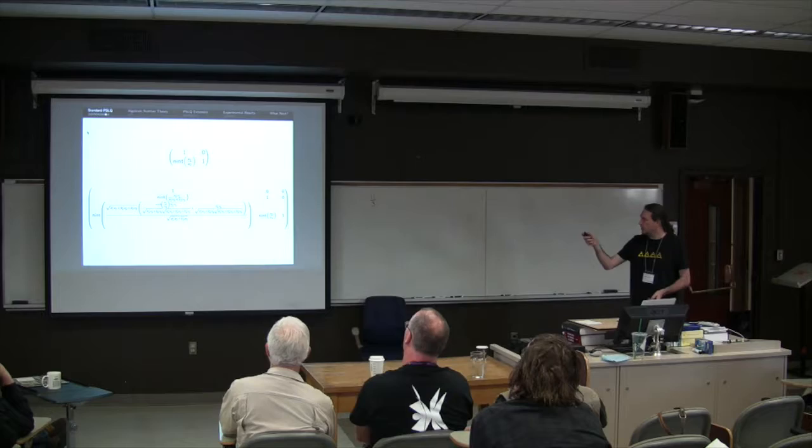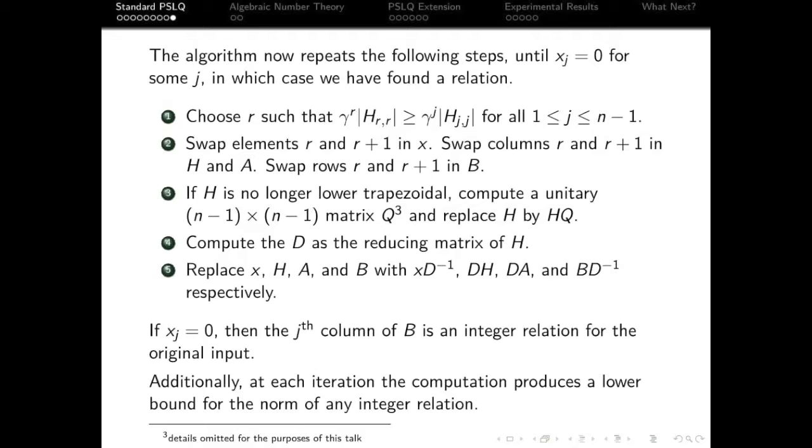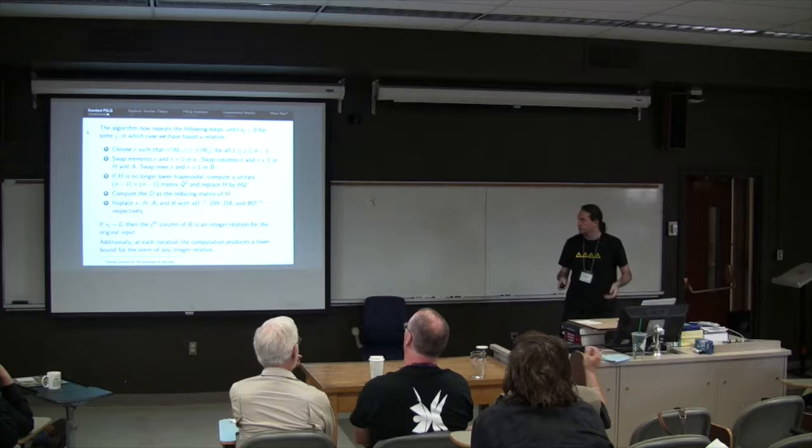we repeat until our xj vector has a zero in it, for some entry. We choose, this is where our gamma comes into play. We look at the diagonal entries of the H matrix. We raise the first diagonal entry to gamma to the power one, the second diagonal entry to gamma to the power two. Sorry, multiply the second entry by gamma to the power two.